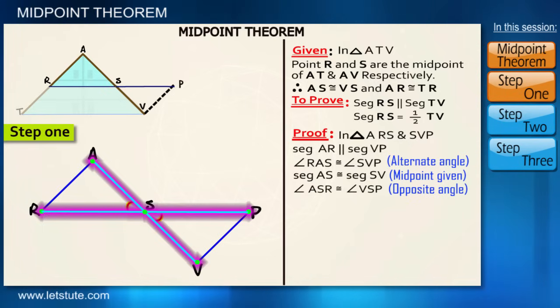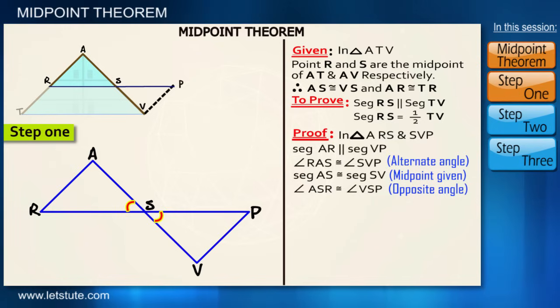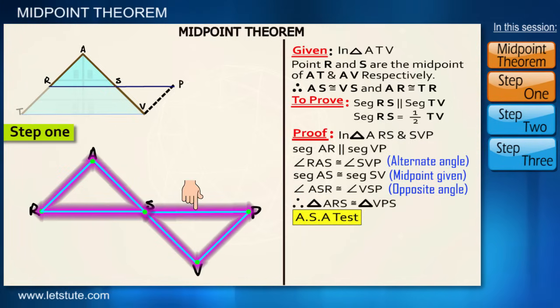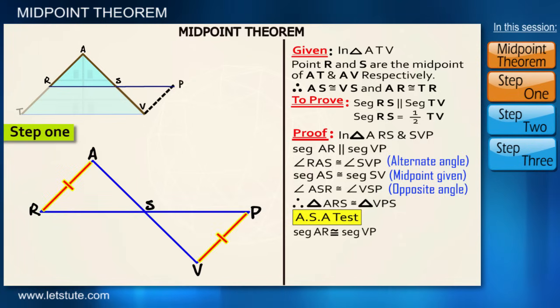Then angle ASR is congruent to angle VSP because they are opposite angles, and according to angle-side-angle congruency test, triangle ARS is congruent to triangle VPS. Hence AR is congruent to VP and RS is also congruent to SP because they are the corresponding sides of congruent triangles.